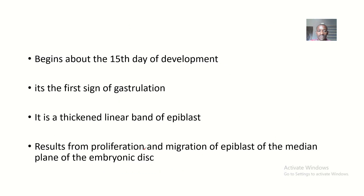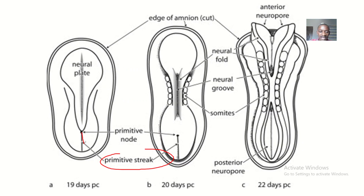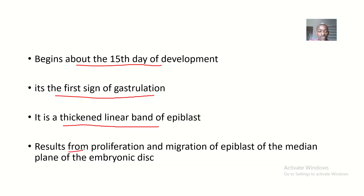About the 15th day of development, primitive streak formation is the first sign of gastrulation. It is basically a thickened linear band of epiblast cells. It results from the proliferation and migration of epiblast cells of the median plane of the embryonic disc.